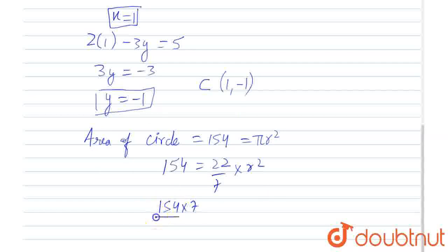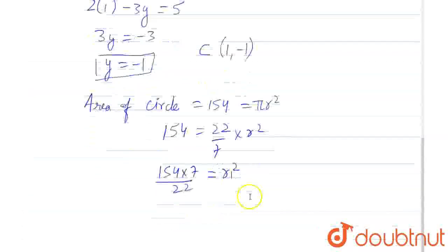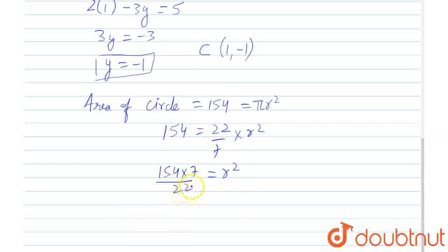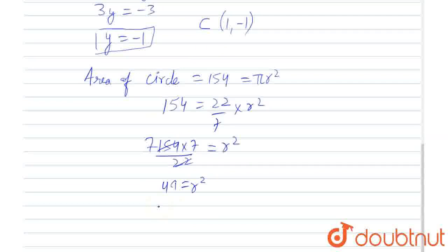So, 154 times 7 by 22 equals r squared, and after simplification, we can easily say 49 equals r squared and r will be 7.